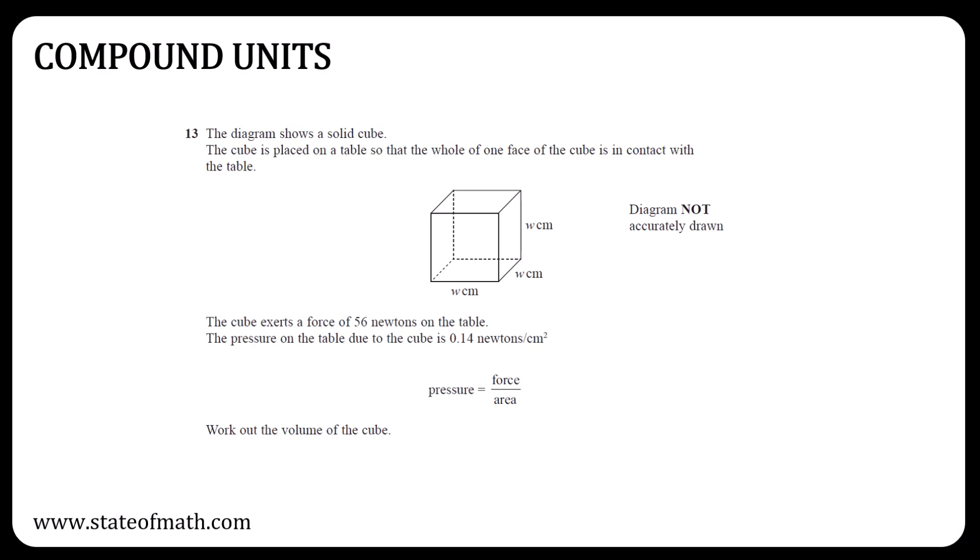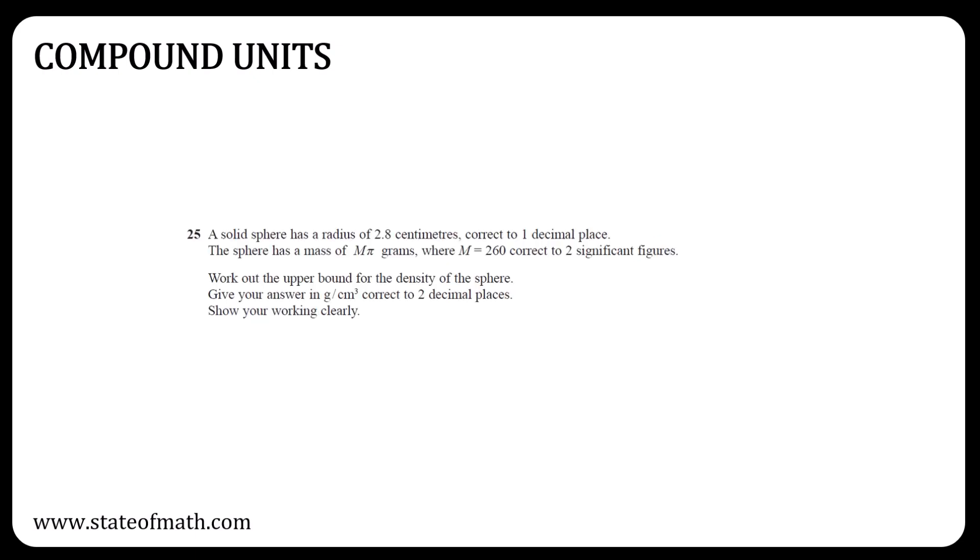No question on compound units, so expect one. Sometimes the formulas are given in the question, like in this question. Some other times you need to remember them. If the formula is not given, then the units can guide you. For example, here we are asked to find the density in grams per cubic centimeter. Grams is the unit of mass, cm cubed is the unit of volume, so density is mass over volume. Regarding the upper and lower bounds question in Paper 1 HR, that was extremely simple, so having another one mixed with another topic will not surprise me.